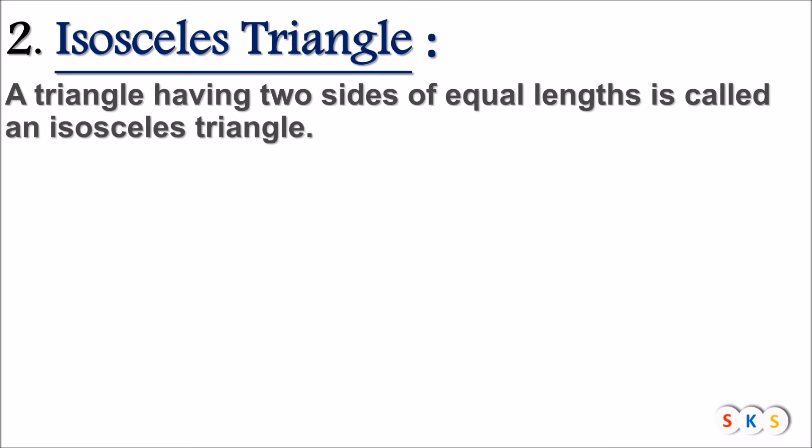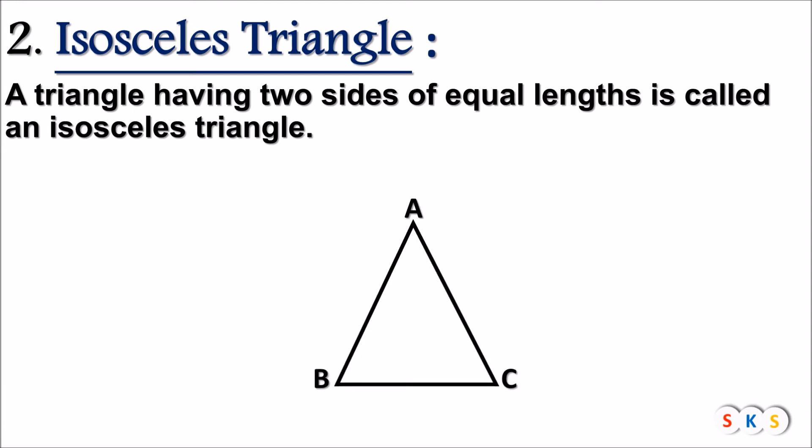Isosceles triangle: A triangle having two sides of equal length is called an isosceles triangle. Look at this triangle. Here seg AB is 6 cm, length of seg BC is 4 cm and length of seg AC is 6 cm. So you can see that this triangle have two sides of equal length that is AB and AC. Such triangle is called an isosceles triangle.